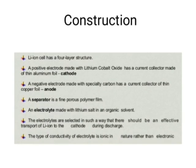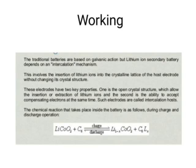The electrolytes are selected so there is effective transport of lithium ions to the cathode during discharge. The conductivity of the electrolyte is ionic in nature rather than electronic. Traditional batteries are based on galvanic action, but lithium-ion secondary batteries depend on the intercalation mechanism — the insertion of lithium ions into the crystalline lattice of the host electrode without changing its crystal structure. These electrolytes have two key properties: an open crystal structure allowing insertion or extraction of lithium ions, and the ability to accept compensating electrons. Such electrodes are called intercalation hosts. The chemical reaction is: LiCoO2 + C6 ⇌ Li(1-x)CoO2 + C6Lx.